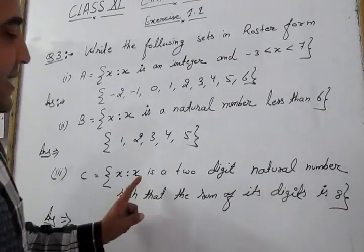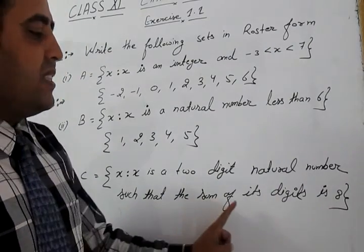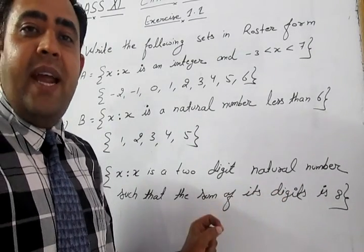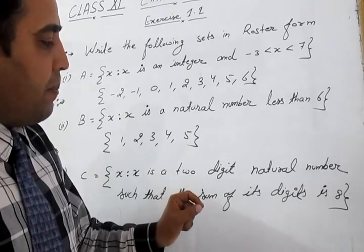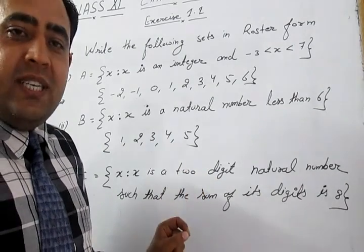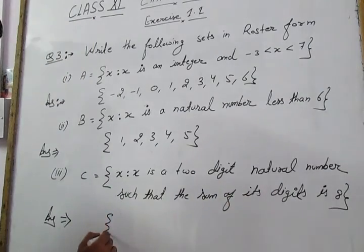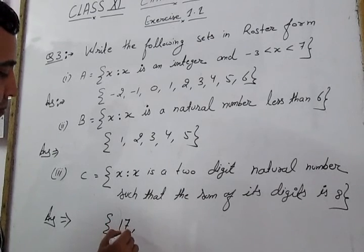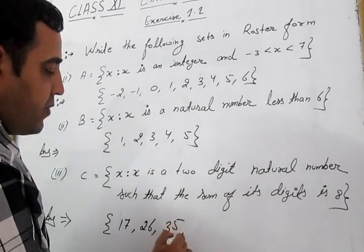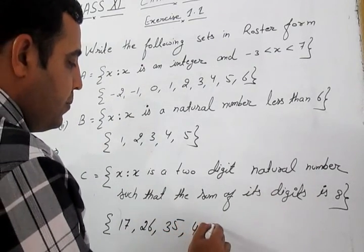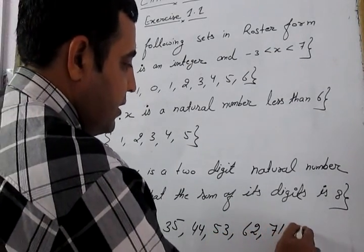Part C: {x : x is a two-digit natural number such that the sum of its digits is 8}. Two-digit natural numbers go from 10 to 99. Those with digit sum equal to 8 are: 17, 26, 35, 44, 53, 62, 71, and 80.